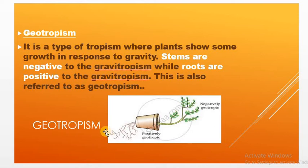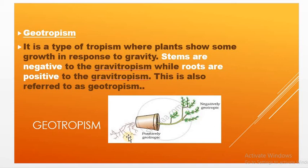The next type is geotropism. Geo means gravity. It is a type of tropism where plants show growth in response to gravity. Stems show negative geotropism — also known as gravitropism — growing away from gravity. Roots show positive gravitropism, growing towards the earth. You can see that roots go towards the center of the earth while the stem grows opposite to the direction of gravity.